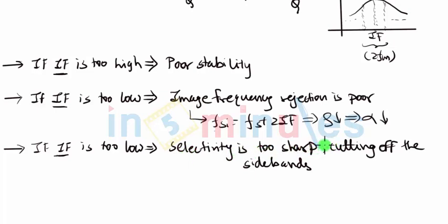When IF was large, we were saying that the selectivity is poor. So it is very obvious that if the IF is too low, then the selectivity will be too sharp.